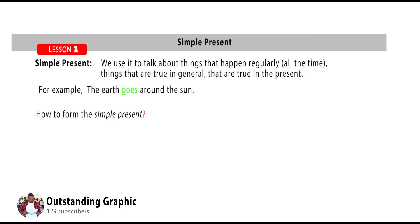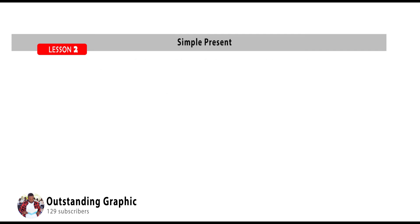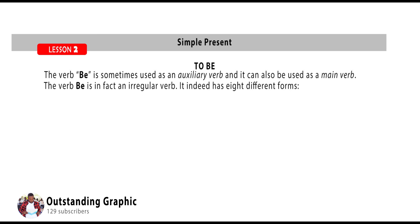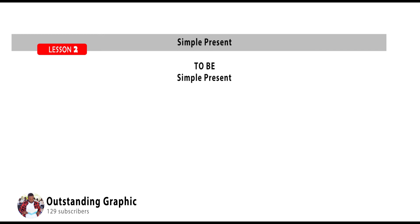How is the simple present formed? To form the simple present, all you have to do is use a subject pronoun plus a verb. The verb 'be' can be used as an auxiliary verb or as a main verb — it's an irregular verb and has eight different forms: I am, you are, he is, she is, it is, we are, you are, they are.